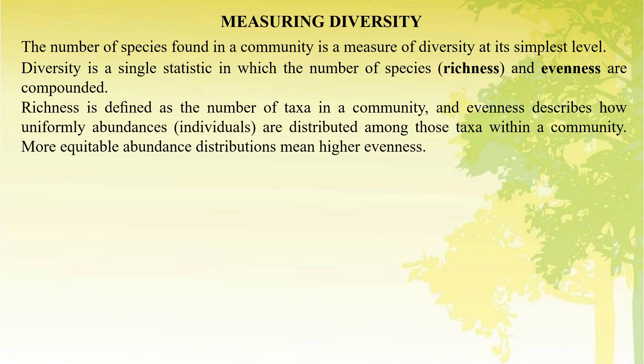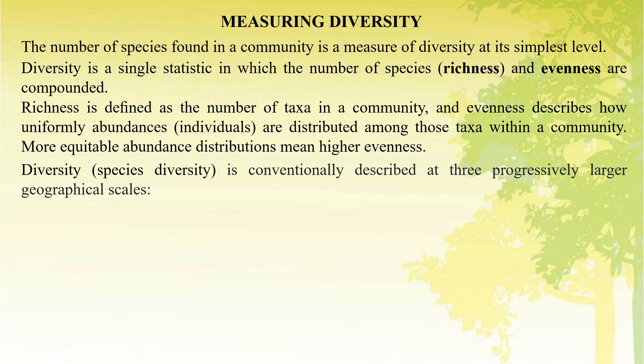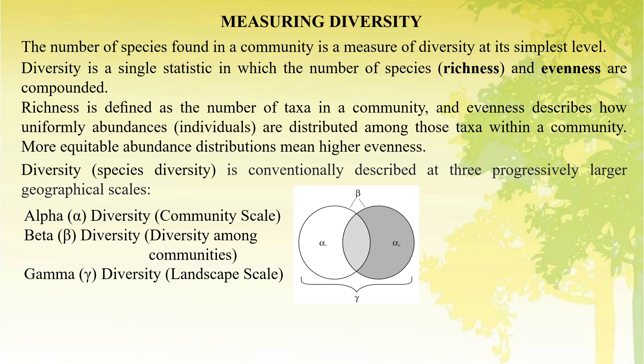This has already been described in my earlier video. Species diversity is conventionally described at three progressively larger geographical scales. Alpha diversity is for community scale. Beta diversity is diversity among communities. And gamma diversity is for landscape scale.